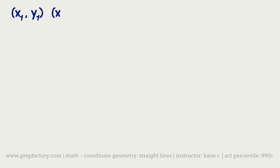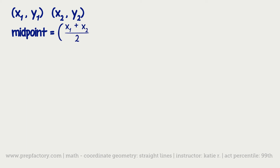Still on straight lines — the midpoint formula is important to know. If you're trying to find the midpoint between two endpoints (x1, y1) and (x2, y2), you simply average them. The midpoint is x1 plus x2 divided by 2, comma, y1 plus y2 divided by 2. That gives you a new point.